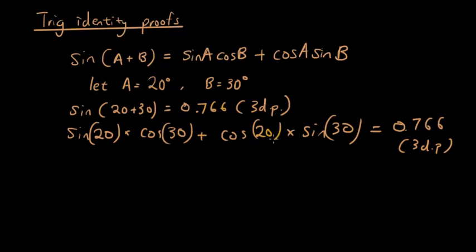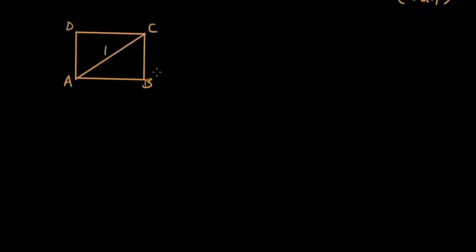But where does this rule come from? How did somebody know that sine(20 + 30) equals all of that? Let's go through the proof. The first thing I'm going to do is draw a rectangle where the length of the diagonal is one unit. This rectangle has right angles at all of the corners and a diagonal that is one unit long. I'm going to label the angle here as angle x — the angle that the diagonal makes with the horizontal.